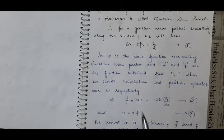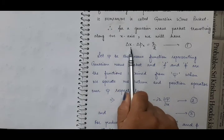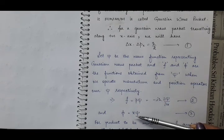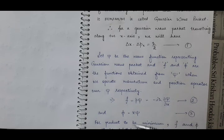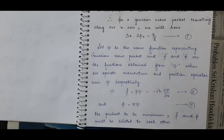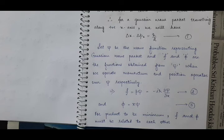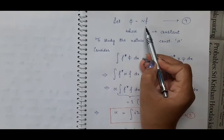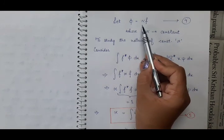What we have to prove is that this product is minimum. And if this product is minimum, it means there is a relation between x and p. And if there is a relation between x and p, then there must be some relation between phi and f. So if the wave packet is the Gaussian wave packet, the product of uncertainty is minimum, and there is a relation between x and p, then there must be some relation between these two functions phi and f.